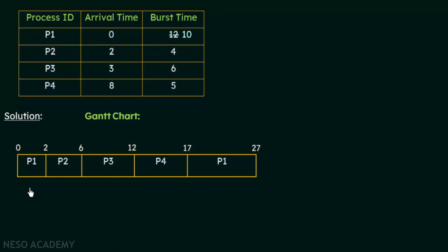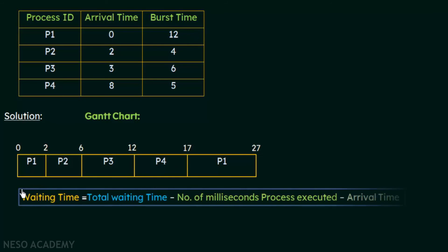Now, how do we calculate the waiting times? The formula discussed previously is: waiting time equals the total waiting time minus the number of milliseconds the process already executed, minus the arrival time. This is determined by looking at the Gantt chart.